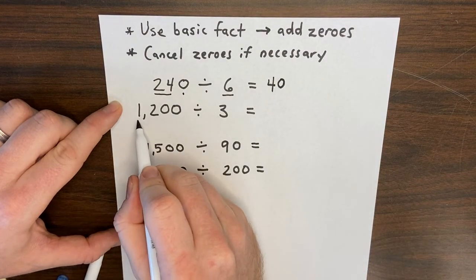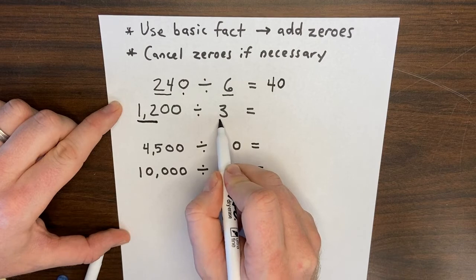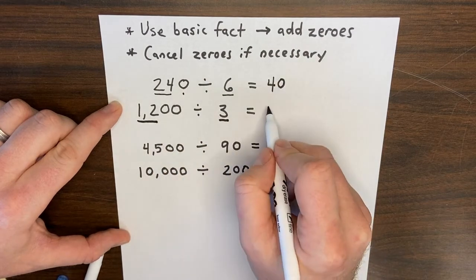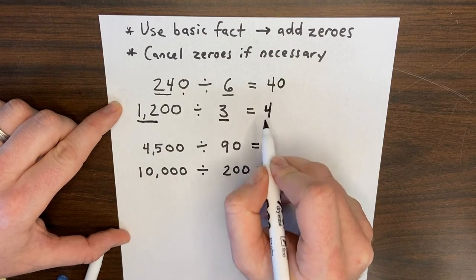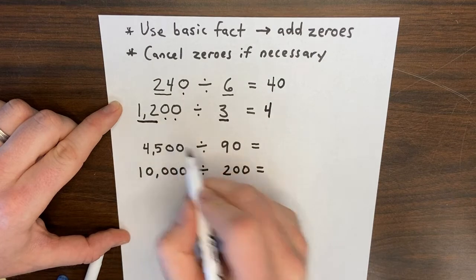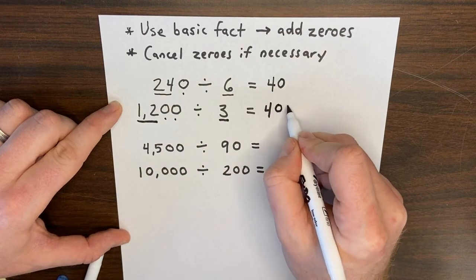Next one. Underline the basic fact. 12 divided by 3 is again 4. I look back. This time there are two zeros, so I add two zeros to my quotient.